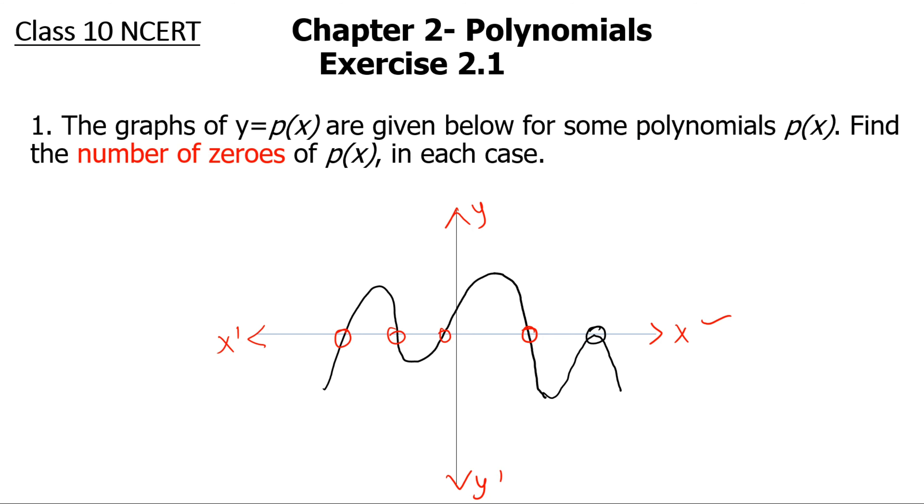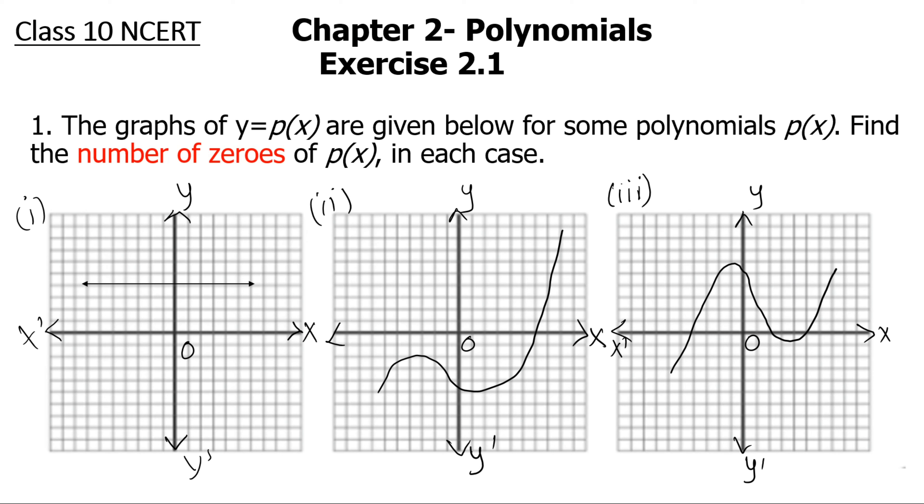Now let's start with the actual problem. The first one, see, this graph given here is a straight line which is parallel to x-axis and it is not touching the x-axis anywhere or crossing it. So there are no zeros.